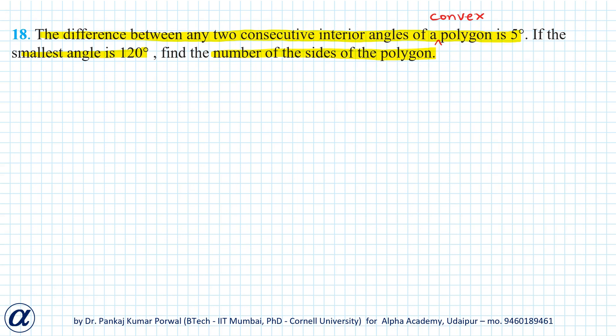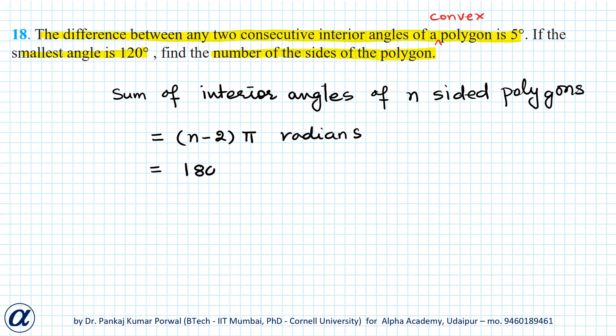We need to know the sum of all the interior angles of an n-sided polygon. So first, I will write: sum of interior angles of n-sided polygon equals n minus 2 times π in radians, or 180 times n minus 2 in degrees. So let's move to solving this question.